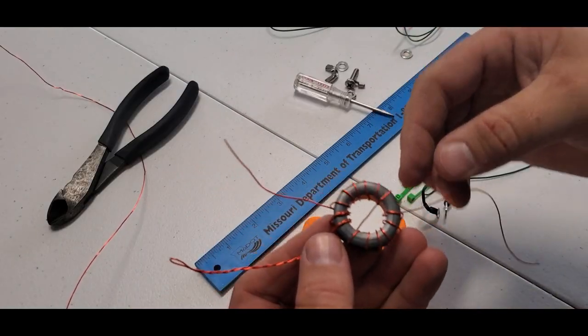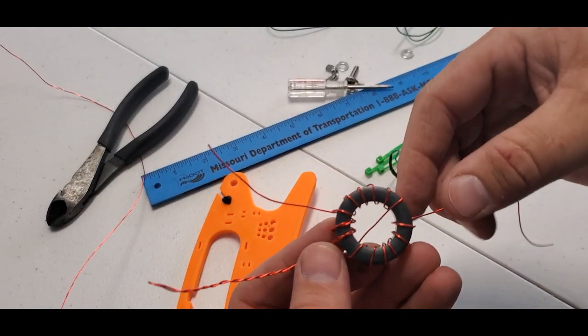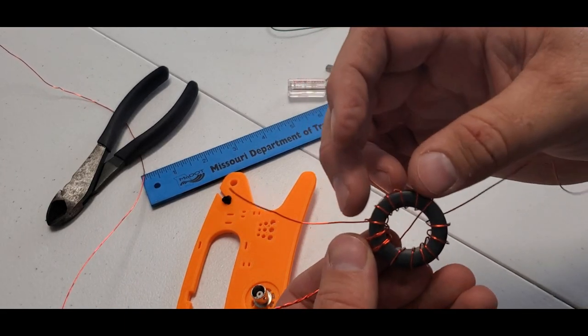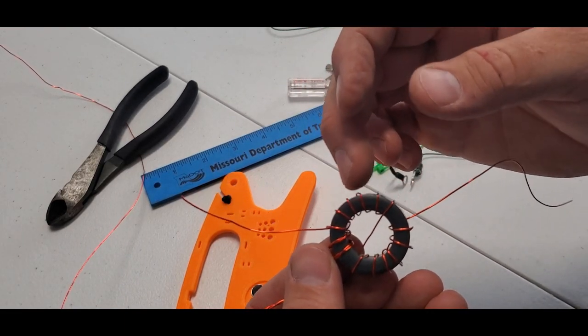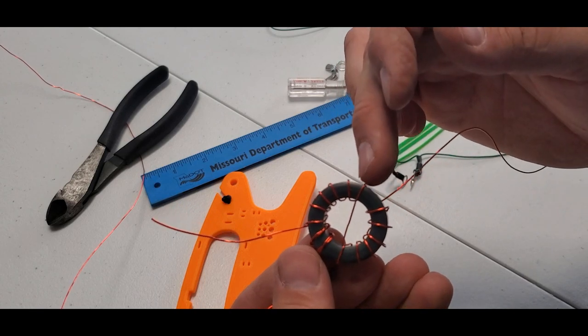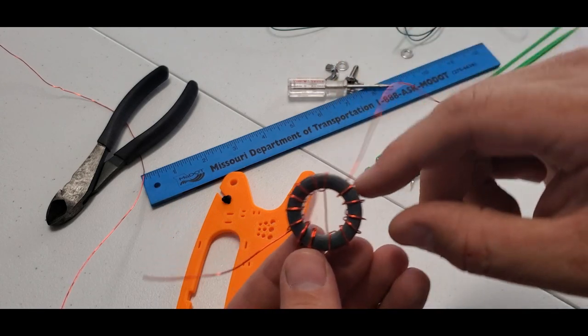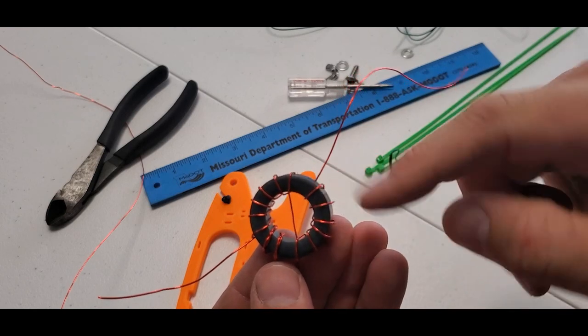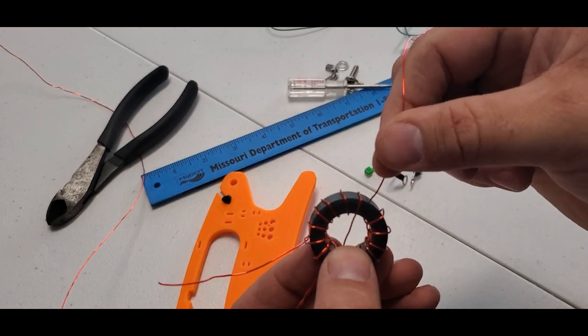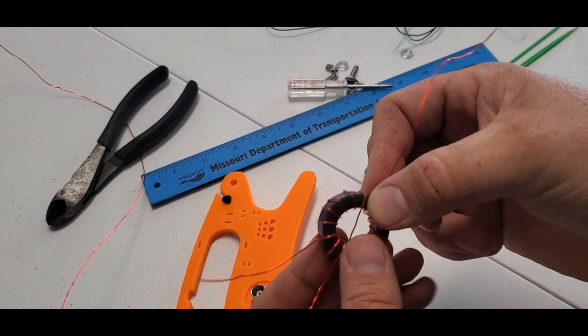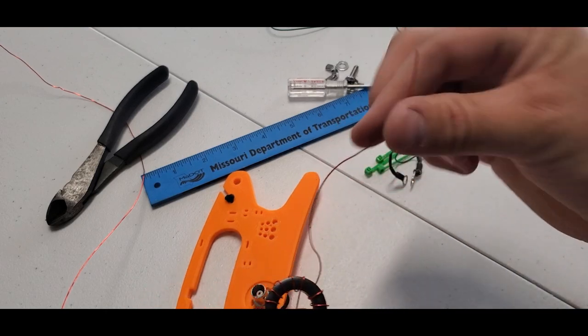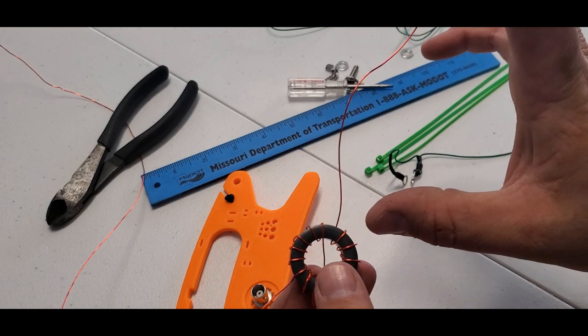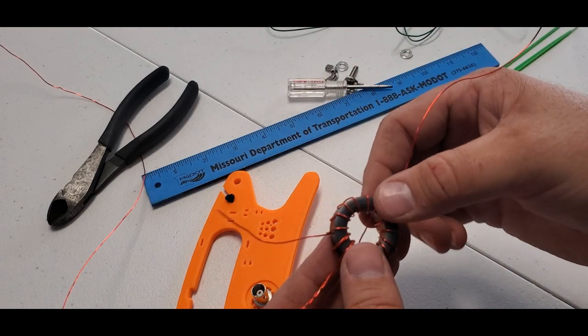All right, so what we have here now is 14 wraps around the toroid. We have two primaries and then it starts with three, four, five, six, seven, eight. On the eighth one, it goes through the center and here's nine, 10, 11, 12, 13, 14. Now we went ahead and cut off the excess wire. As long as we have three to five inches hanging out here, we'll have plenty of extra wire.